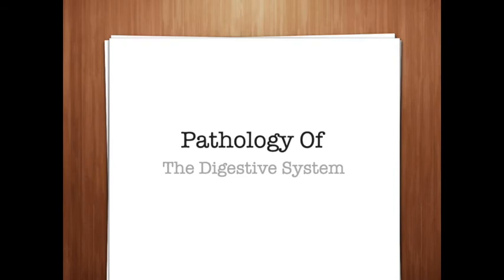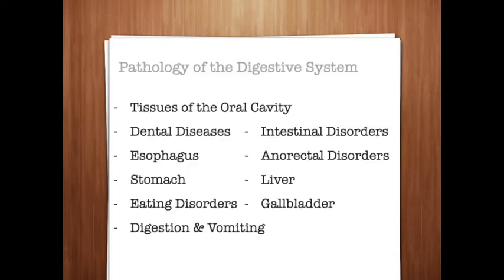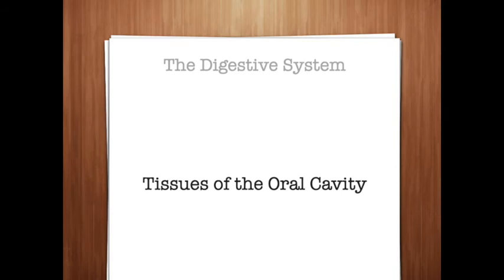Now that we've seen how the digestive system works correctly, let's look at its pathology — diseases and disorders. We'll start with the tissues of the oral cavity and move on to dental diseases, followed by diseases of the esophagus, stomach, eating disorders, intestinal disorders, anorectal disorders, and issues with the liver and gallbladder. Aphthous ulcers, also known as canker sores, are recurrent blister-like sores that break and form lesions on the soft tissues lining the mouth. Although the exact cause is unknown, their appearance is associated with stress, certain foods, or a fever.